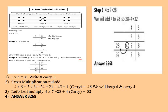To recap: first step, 3 into 6 gives 18 — write 8 and carry 1. Cross multiplication: 4 into 6 plus 7 into 3 gives 24 plus 21, equal to 45, add carry 1 to get 46 — keep 6 and carry 4. Last step, left multiply: 4 into 7 gives 28, add carry 4 to get 32. So the answer is 3268.